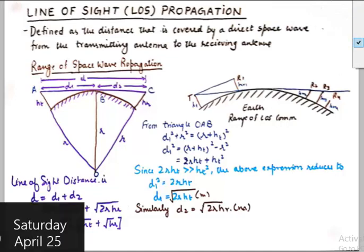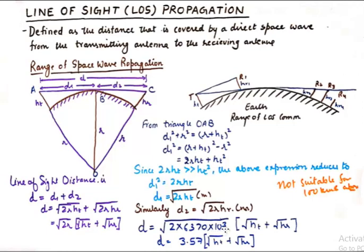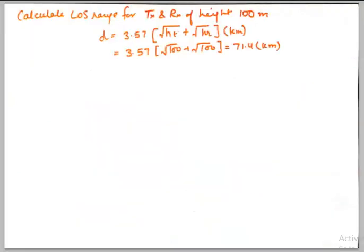The radius of the earth is 6370 kilometers. Expressing in meters and simplifying, this becomes 3.57, so the range expression can be written in kilometers as D = 3.57·(√HT + √HR). A key point is that line of sight propagation is not suitable for ranges of 100 kilometers and above. For a typical numerical example, if both the transmitting and receiving antennas are 100 meters in height, you can directly substitute to get 3.57·(√100 + √100) = 71.4 kilometers, which is well within the 100-kilometer limit suggested by experts.